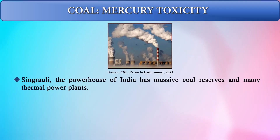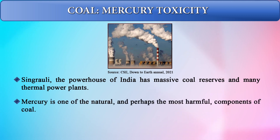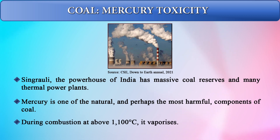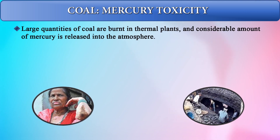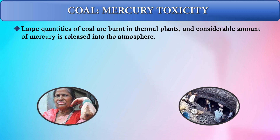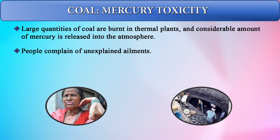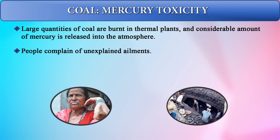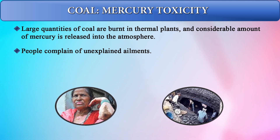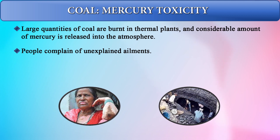Coal contains mercury, which is highly toxic in nature. Singrauli is the powerhouse of India, with massive coal reserves and many thermal power plants. Mercury is one of the most harmful components found in coal, and during combustion at temperatures above 1100°C it vaporizes. Large quantities of coal burnt in thermal power plants release considerable amounts of mercury into the atmosphere. People in these areas are complaining of unexplained ailments including skin depigmentation, chronic kidney failure, and other toxic effects on their organs.